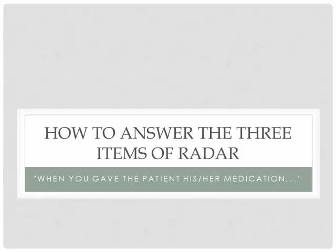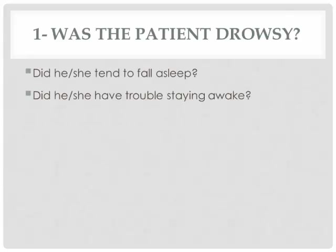How to answer the three items of the RADAR: you answer the three items after you have given the medication to your patient or resident. The first item of the RADAR is: was the patient DRASI? Did he or she tend to fall asleep or have trouble staying awake? If you see these behaviors, then you score yes to this item. Otherwise, if the patient is awake and alert, you score no.